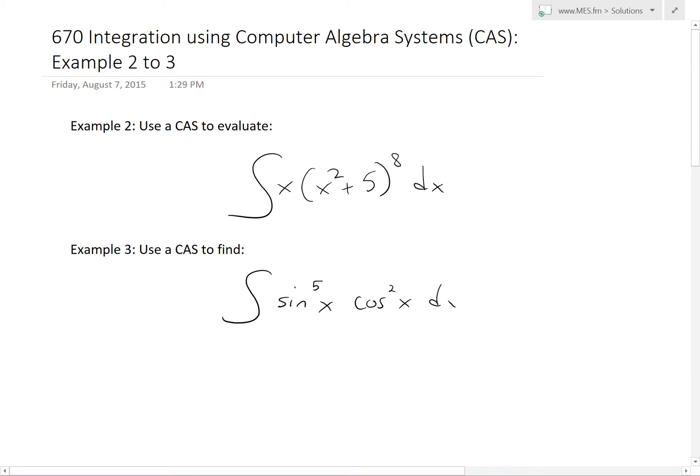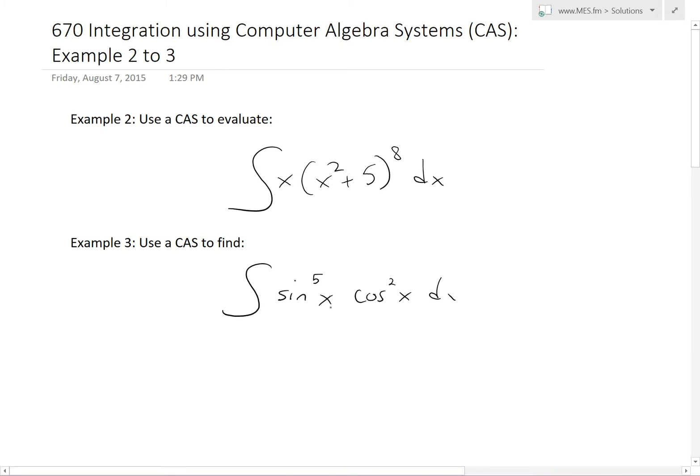And then example three is use a CAS to find integral of sine to power of 5x times cos squared x dx. So let's begin in solving example two first.